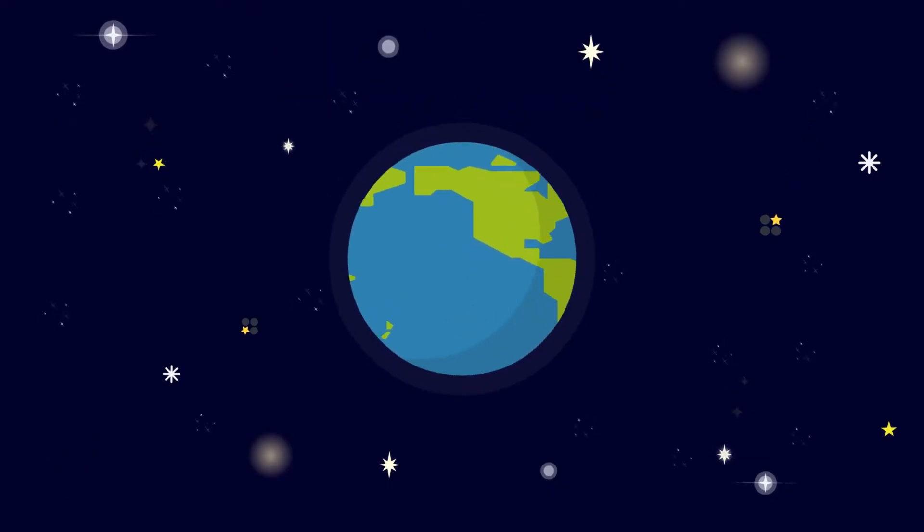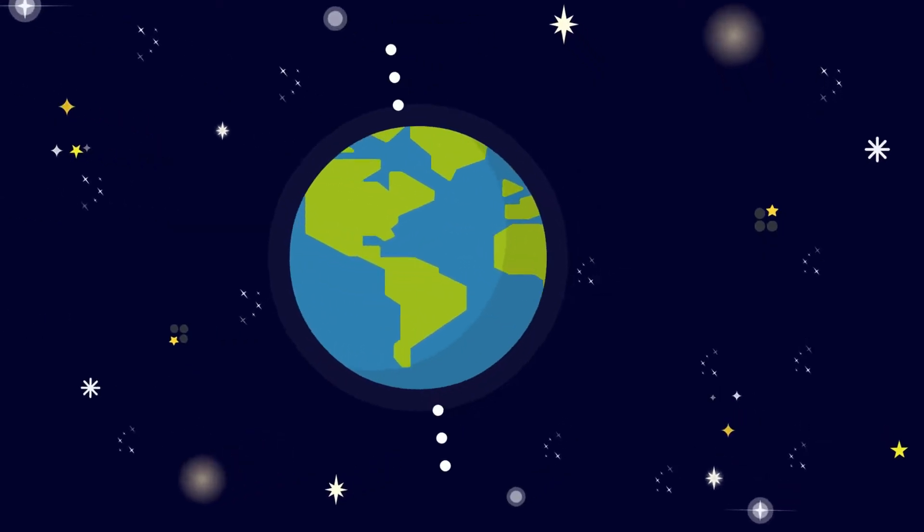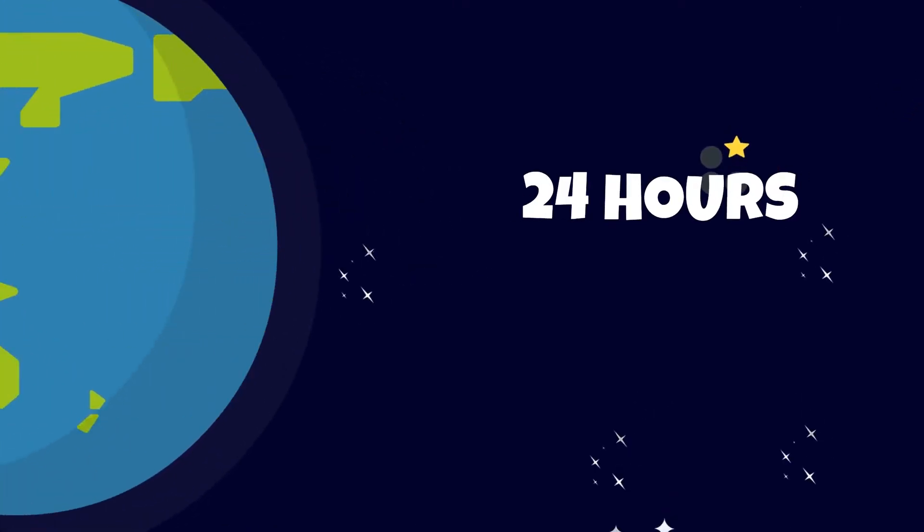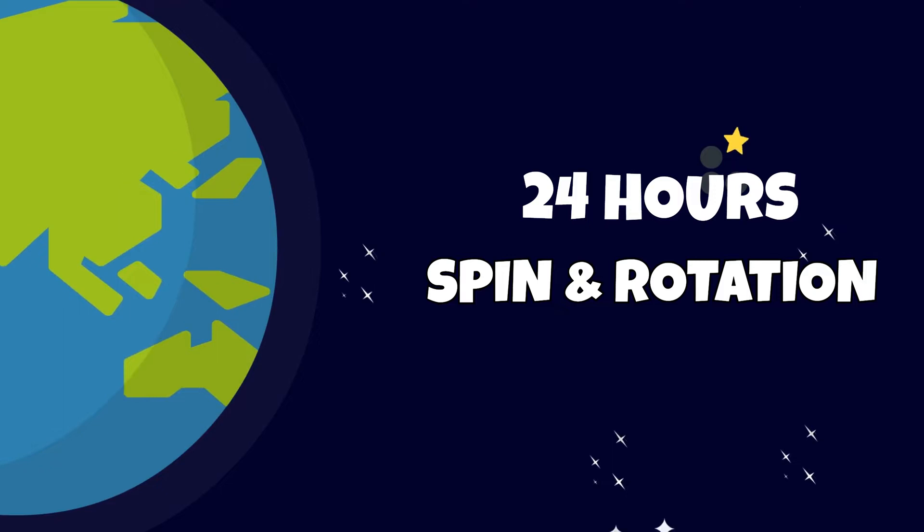The Earth is like a giant sphere that is spinning in outer space on an imaginary line called an axis. It takes the Earth approximately 24 hours to complete one full spin and rotation on its axis.